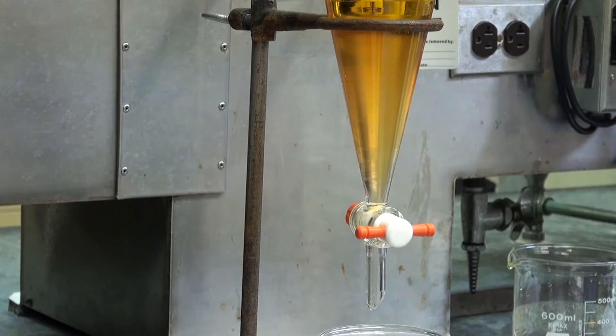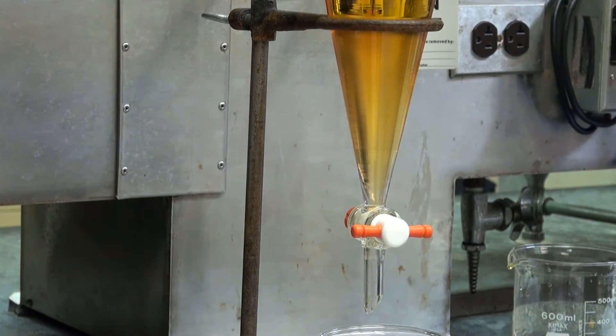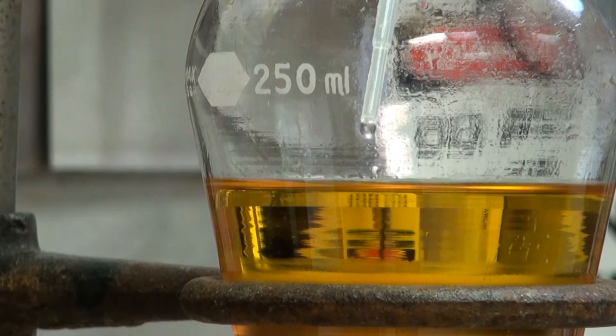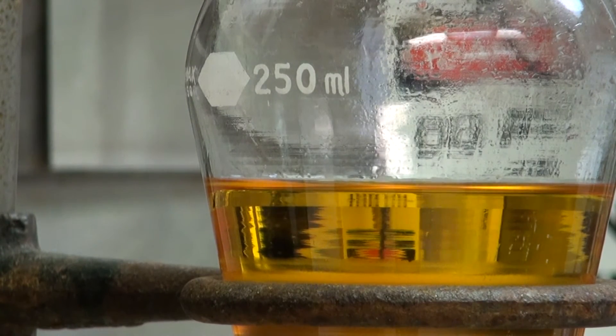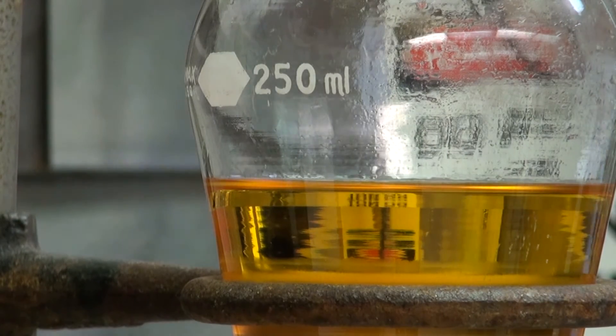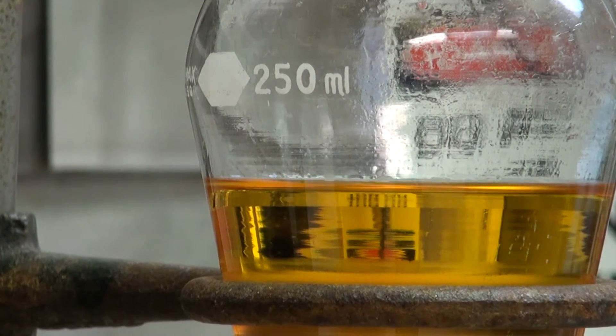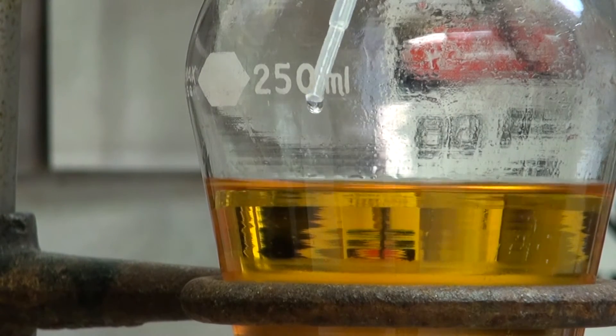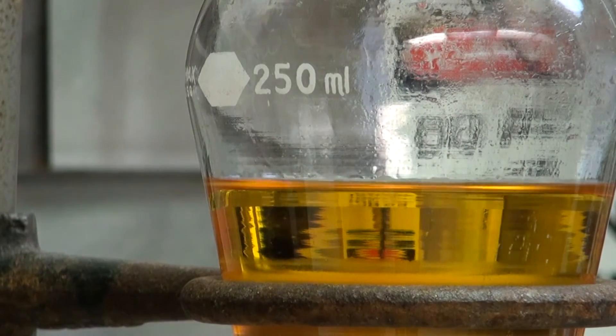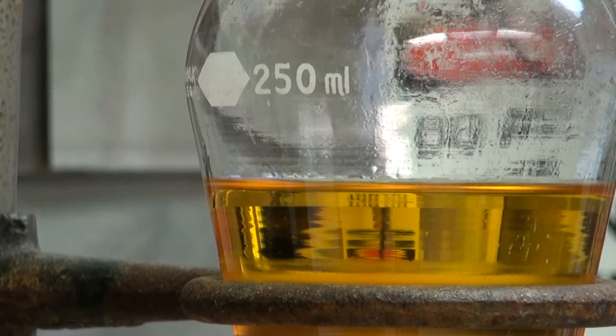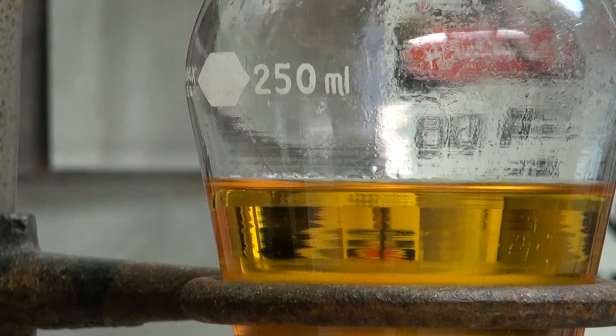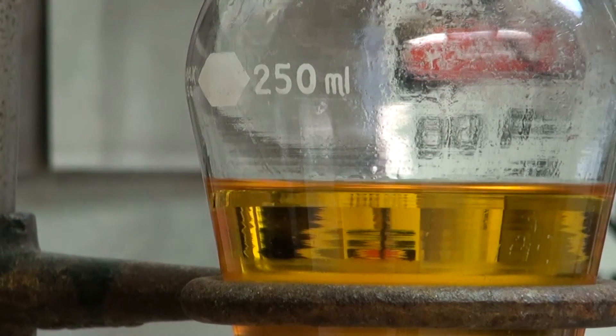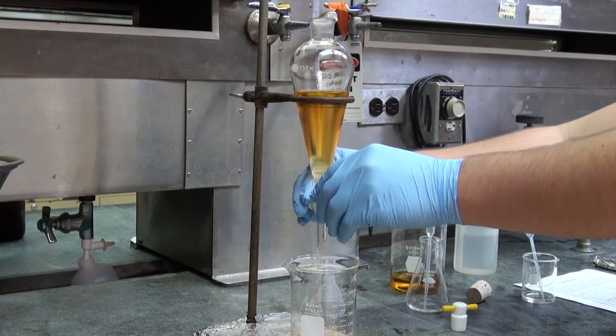Let the layers separate. To know which layer is which, you can use the density of the solvents. You can also use a drop test by adding a drop of water and following the drop. If it goes through the top layer, you know the bottom layer is the aqueous layer. Or if you add ether and the drop stays in the top layer, then the top layer is the ether layer. In this case, the top layer is the ether layer, which was seen by the drop test. Also, if you look at the density, ether will be lighter than water, so that is the top layer.